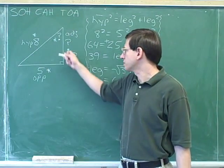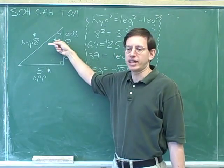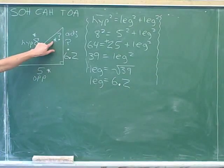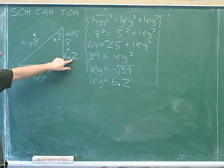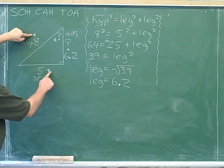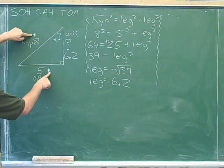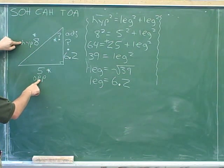We've answered one of the questions — we found out how long this leg was. Now our other question is to figure out how big this angle is. What information are we going to use? Theoretically we could use the 6.2, but conventionally people prefer to use the numbers originally given, which we've marked with asterisks. So we're going to use the 8 and the 5. Those represent the opposite side and the hypotenuse — the numbers we were originally given. So what trig function should we use that involves the opposite and the hypotenuse?